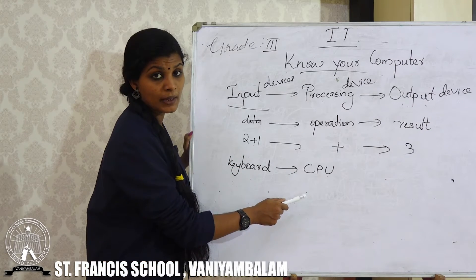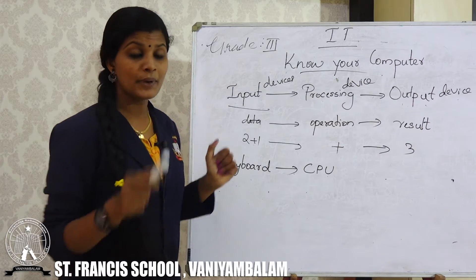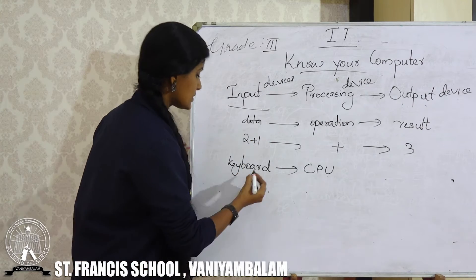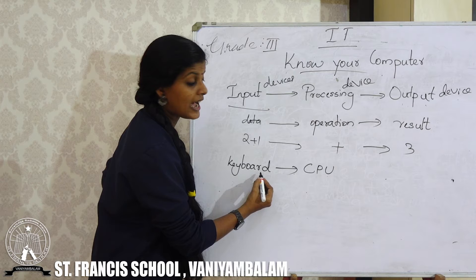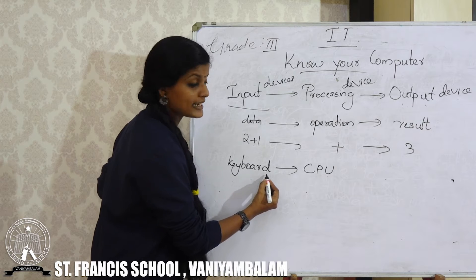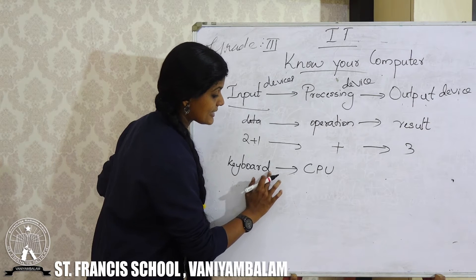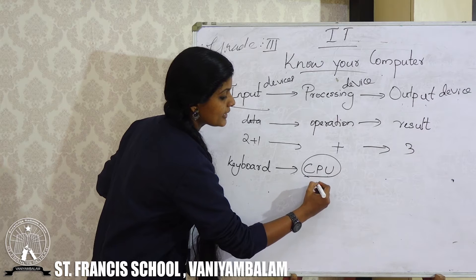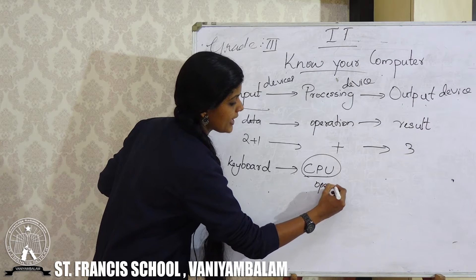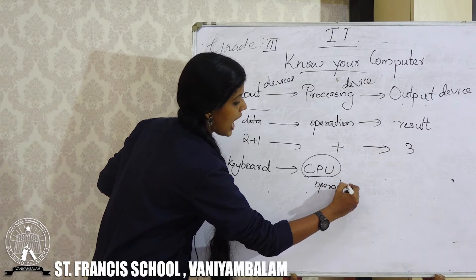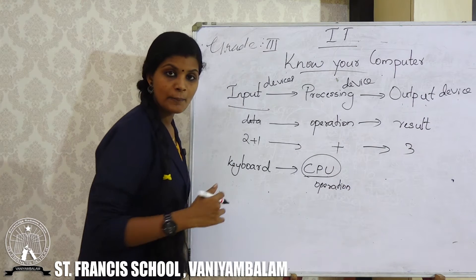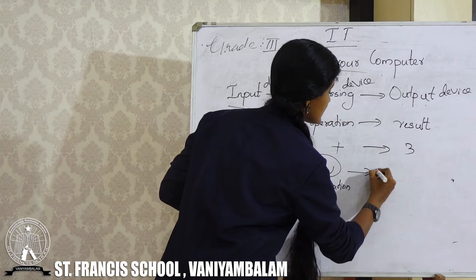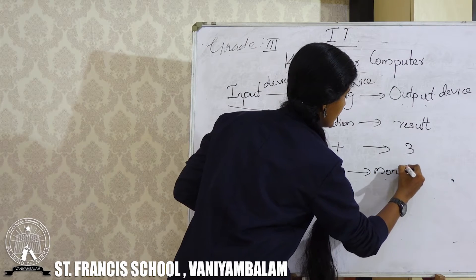The CPU is the brain of the computer, where this processing will be done. Using the keyboard, we will enter our data and instructions. Then these instructions and data will go to the CPU, and there the operation will be performed. After performing this operation, where can we see this result? We can see the result on the monitor.